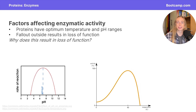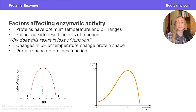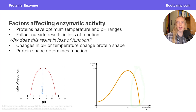Why does an enzyme experience a loss of function when it moves outside of the optimal pH range or optimal temperature range? Temperature and pH both influence protein shape. When we move outside of the optimal temperature or optimal pH, the change in shape results in a loss of function of our enzymes. Temperature and heat can be used to denature a protein, which is what results in this rapid drop-off, as the enzyme becomes denatured and can no longer fulfill its function.